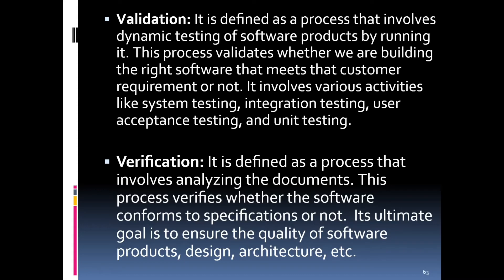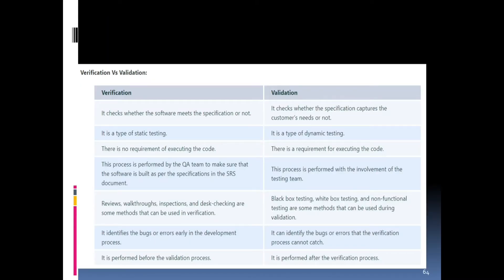Verification checks whether the software meets its specifications, whereas validation checks whether the specifications capture the customer needs. Verification is essentially about meeting software requirements, while validation is from the business or customer needs point of view. Verification is a type of static testing, whereas validation is dynamic testing since customer requirements may change over time while software requirements generally remain the same.